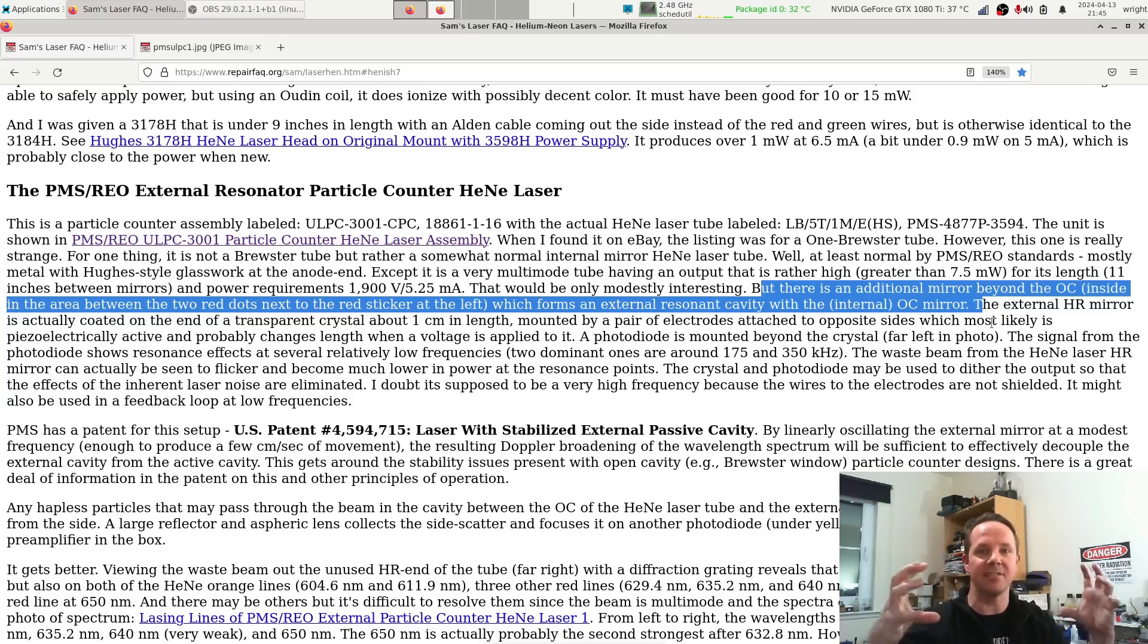What's interesting is there's an additional mirror beyond the output coupler that actually reflects the beam back into the laser, which I said in a previous episode is a very strange thing to want to do. It can cause all sorts of instabilities in a laser when you do that—it can cause the beam to go out.